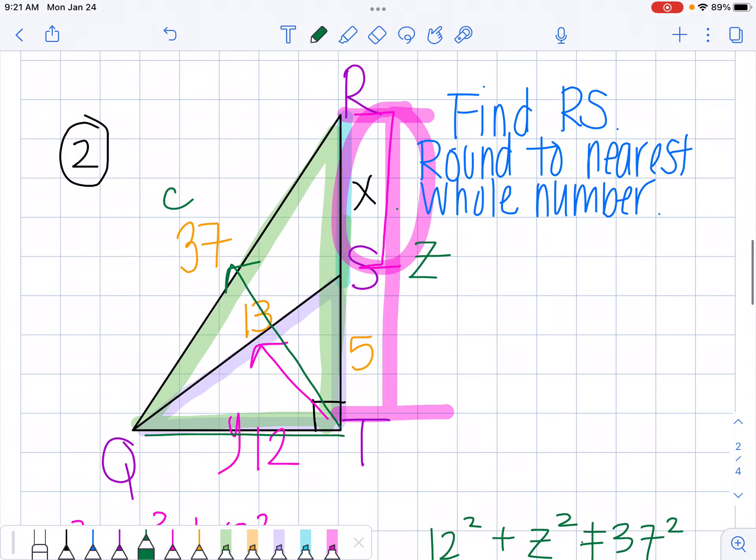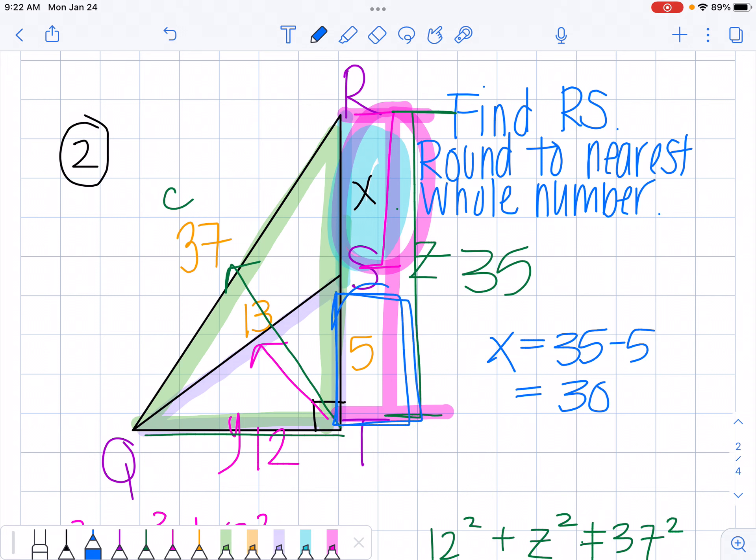Now that tells me that this whole thing from the top to the bottom is 35, and I only want to know this portion right here. So to find that, I'm going to say my x value is equal to 35 minus 5, or 30. And I'm taking away 5 because this bottom part is 5. So this top part is 30, which makes sense if you add these two together, you get 35. So RS is 30. Let me know if you have any other questions. Good luck.